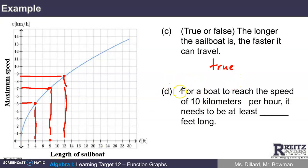So let's look at part D then. Part D says for a boat to reach the speed of 10 kilometers per hour, it needs to be at least how many feet long? Well, let me see if I can find 10 kilometers per hour on the graph. You know, kilometers per hour is a speed, so it should be somewhere here on the vertical axis. How about right here? Right there is 10 kilometers per hour.